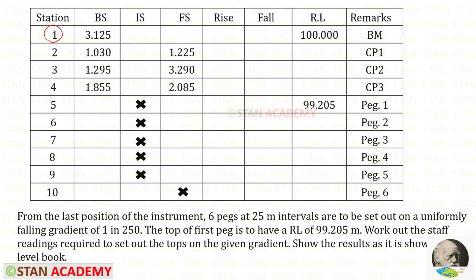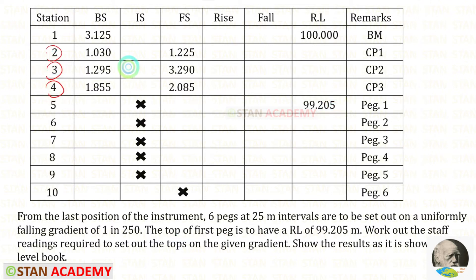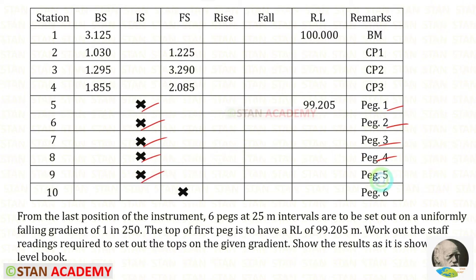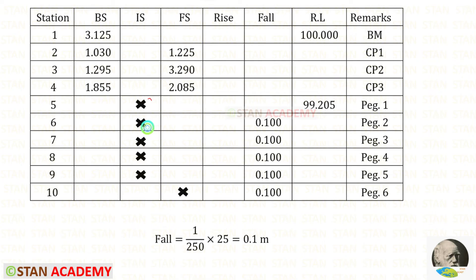The first station is the benchmark where the reduced level is given as 100. In these six stations, for the first station the reduced level is given as 99.205. In station numbers 2, 3, and 4 there are backsights and foresights, so they will be the change points. The readings fall in pegs 1 through 6, and between two consecutive readings the fall is 0.1 — we can apply that.